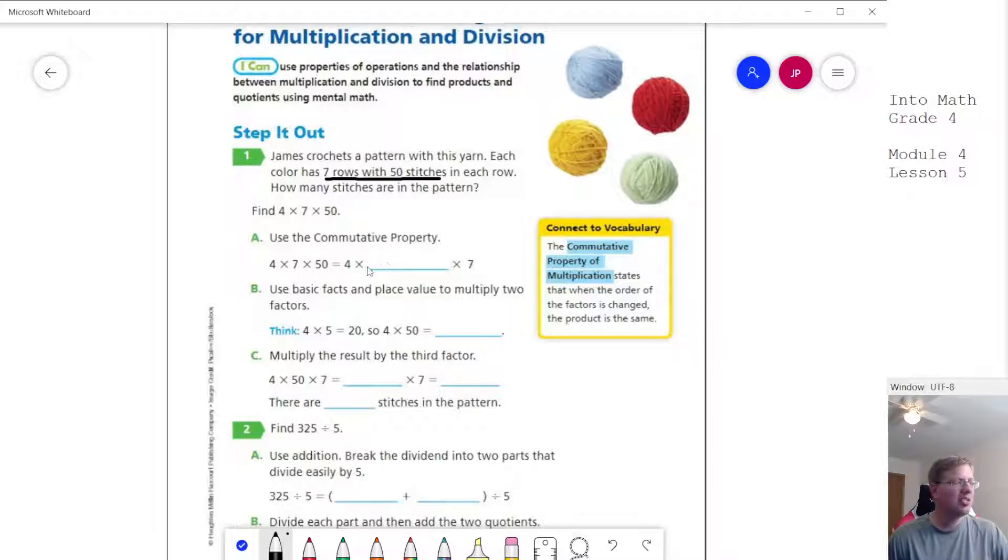We're using the commutative property. We can switch the order of our numbers around. That's going to help us. Even though we're working with a larger number with 50, we should still be able to find the answer really easily. So 4 times 5 is our basic math fact. That gives us 20, which means 4 times 50 is going to give us 200. I usually do the basic math fact, and then we write one extra zero because we have one here.